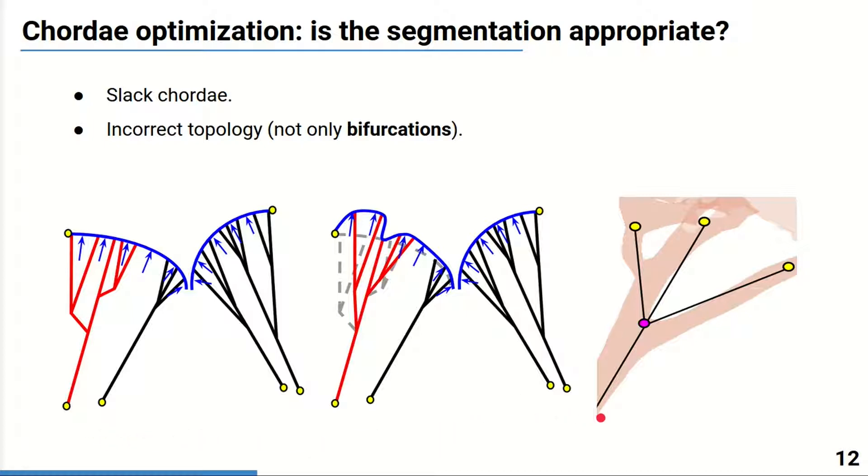Secondly, some trees do not completely agree with the anatomical characteristics. As only bifurcations can be present, a configuration with three segments originating from the same point, as shown on the slide, is not possible.